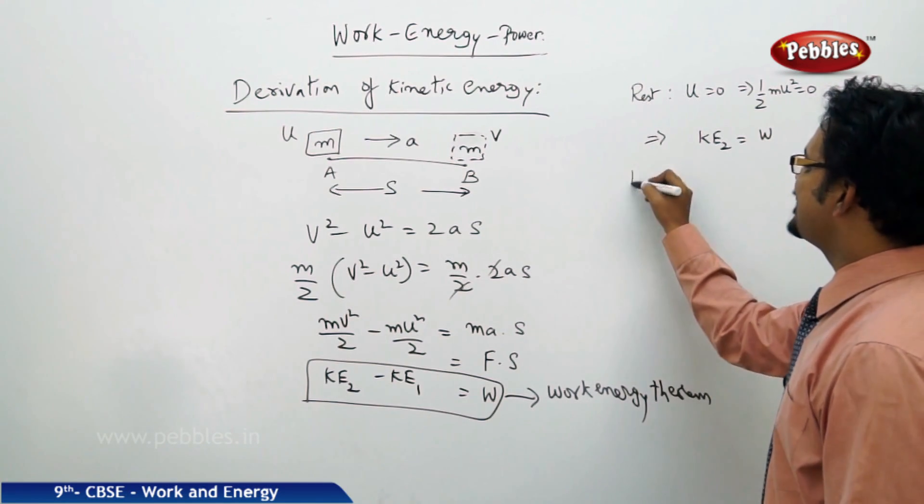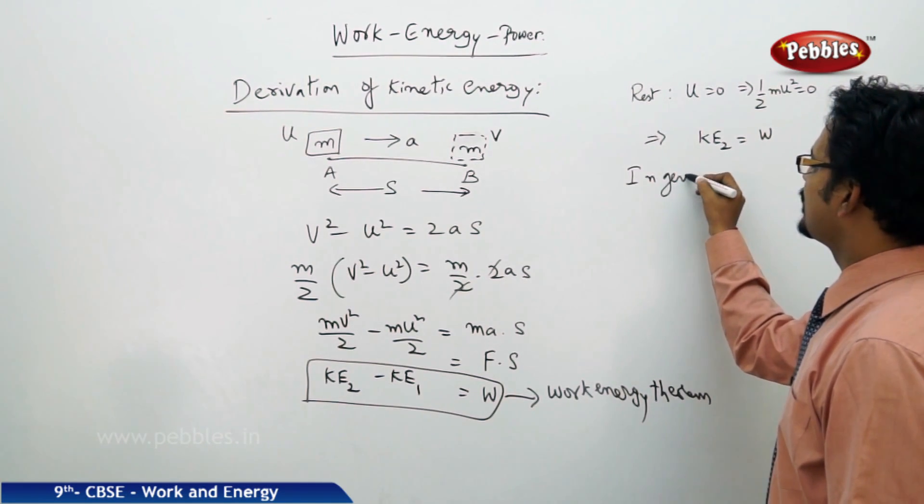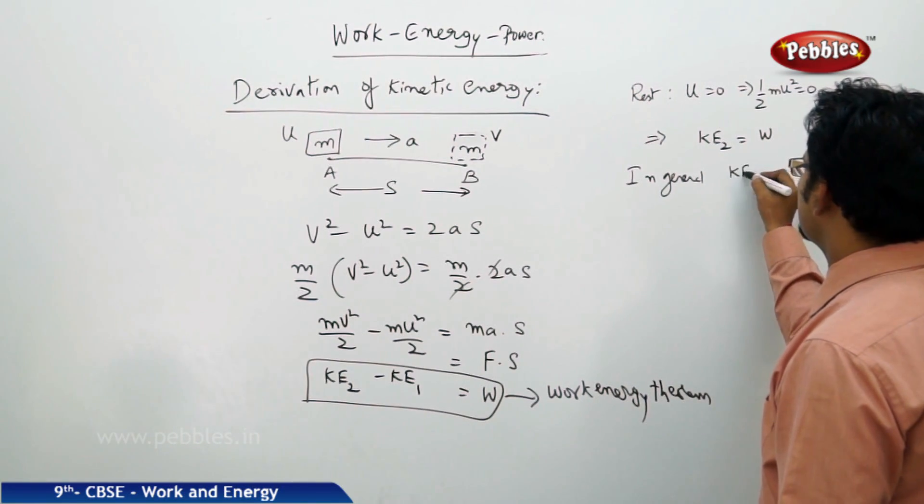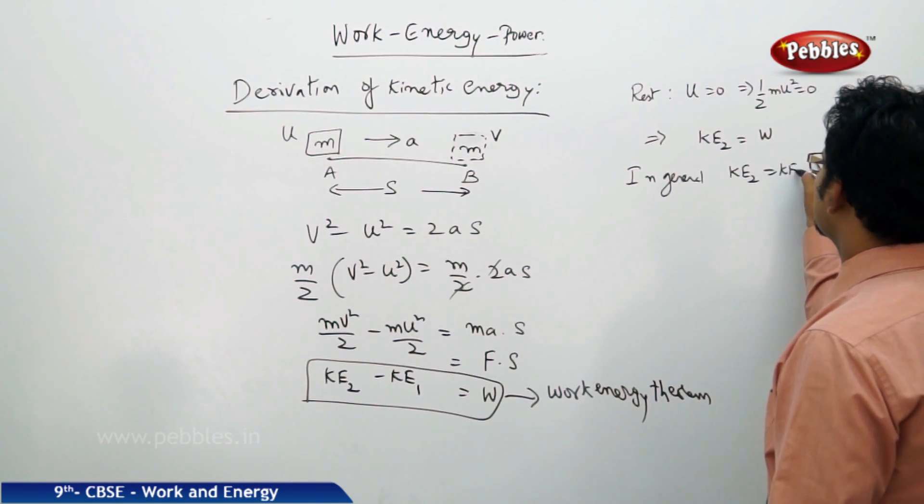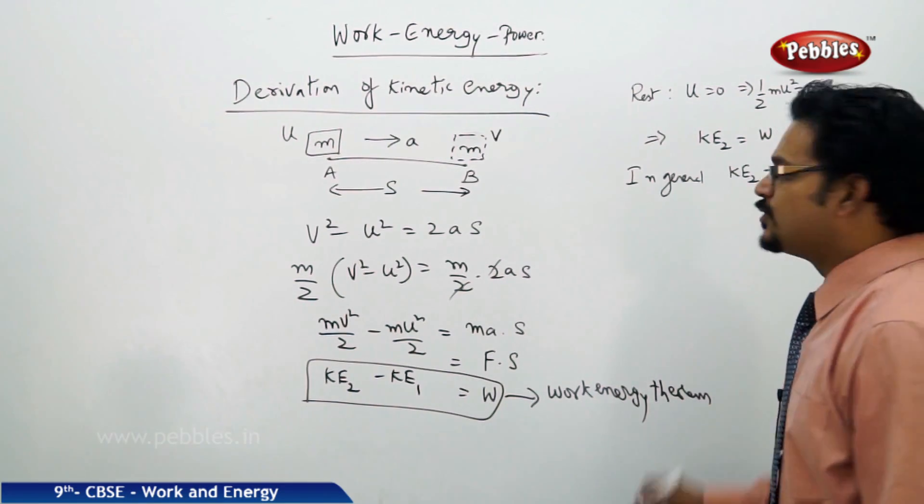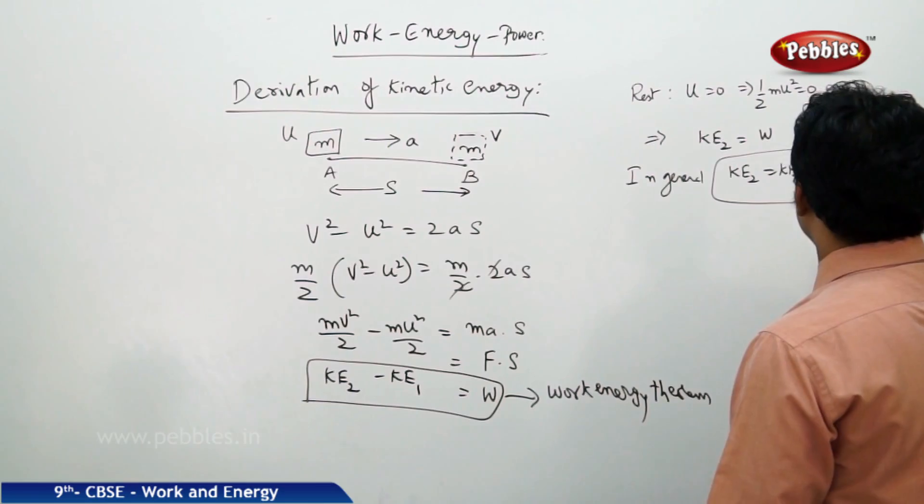If you see this expression here then what happens? KE2 which equals W. So in general we write KE2 as KE which is half mv squared. So this is how we got the formula.